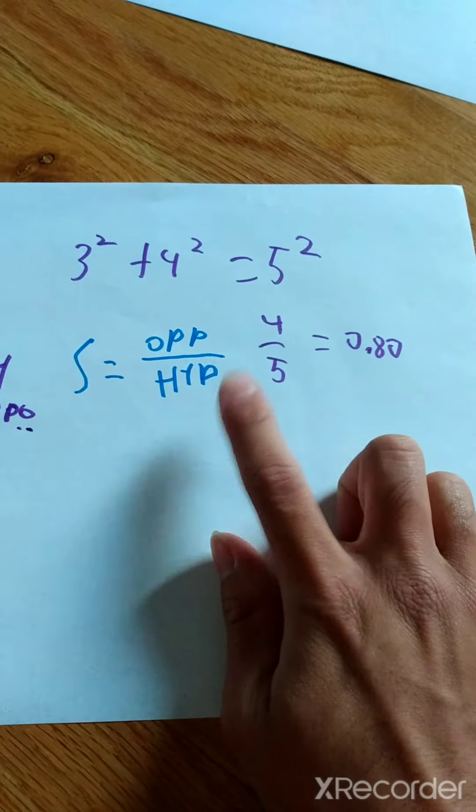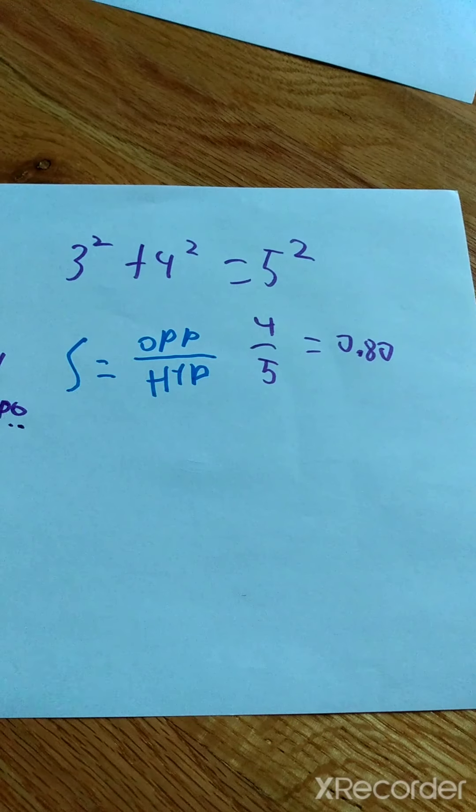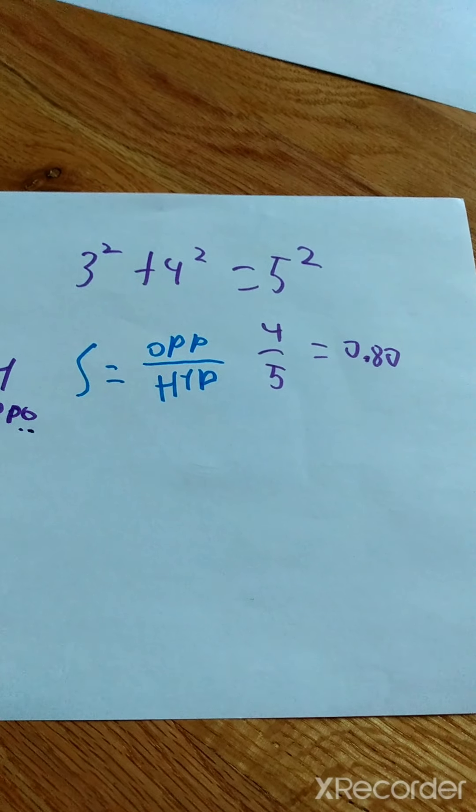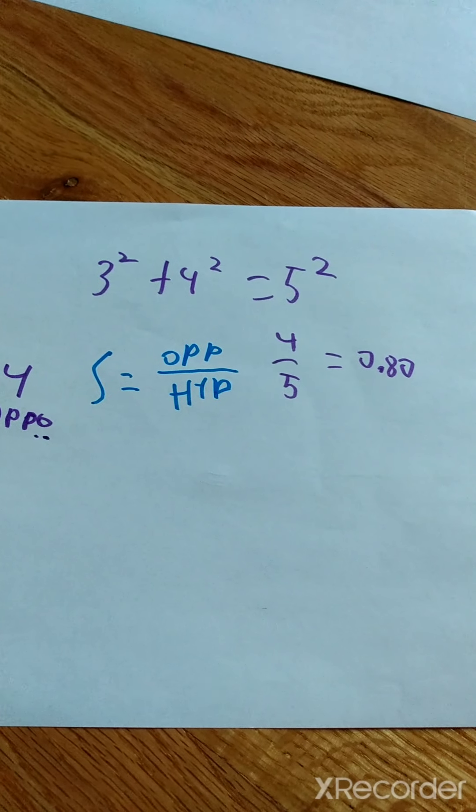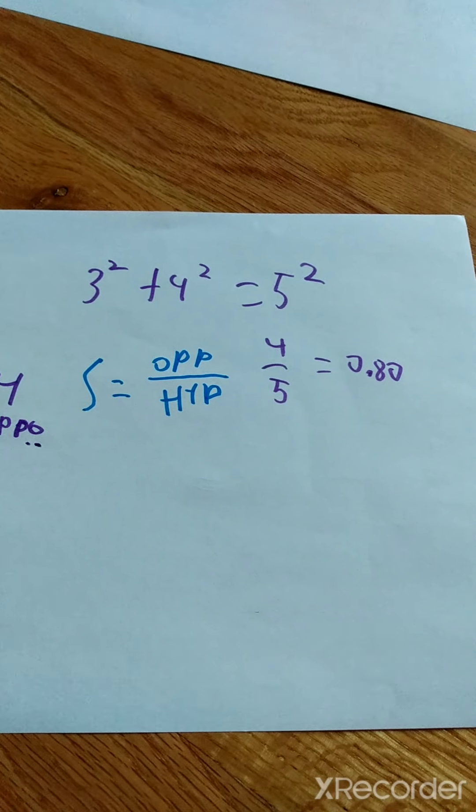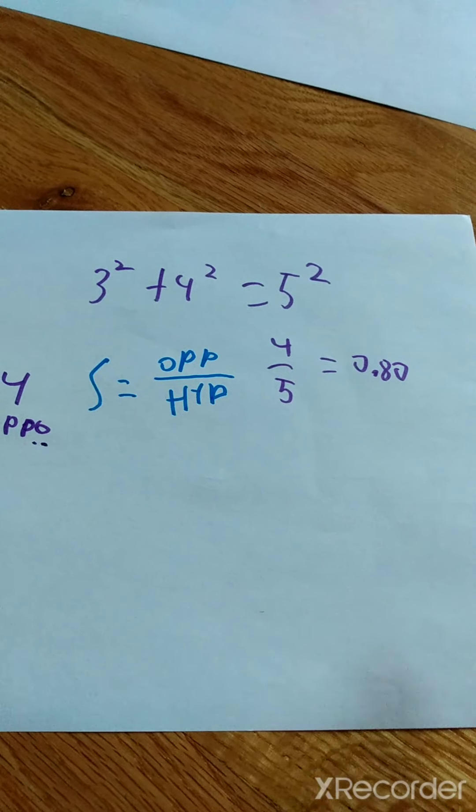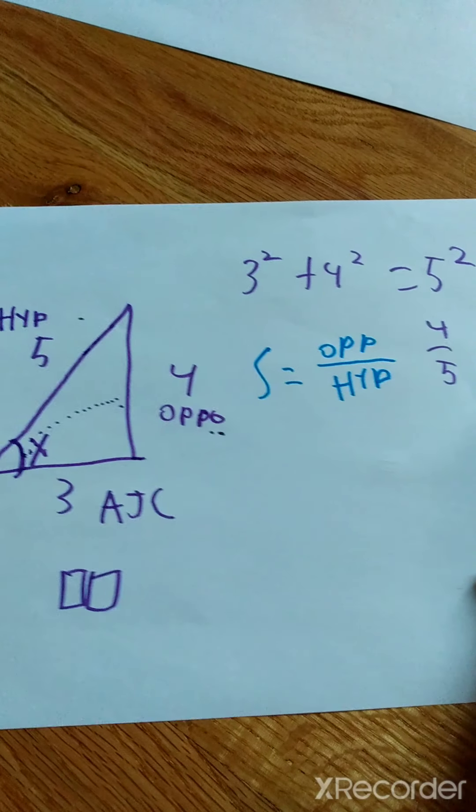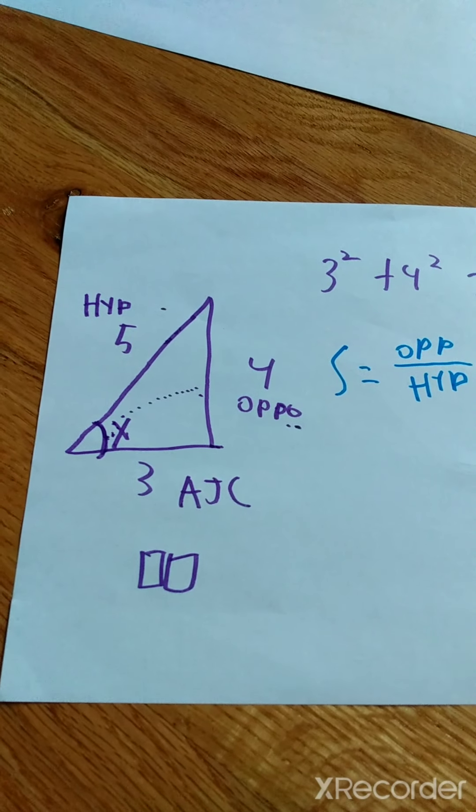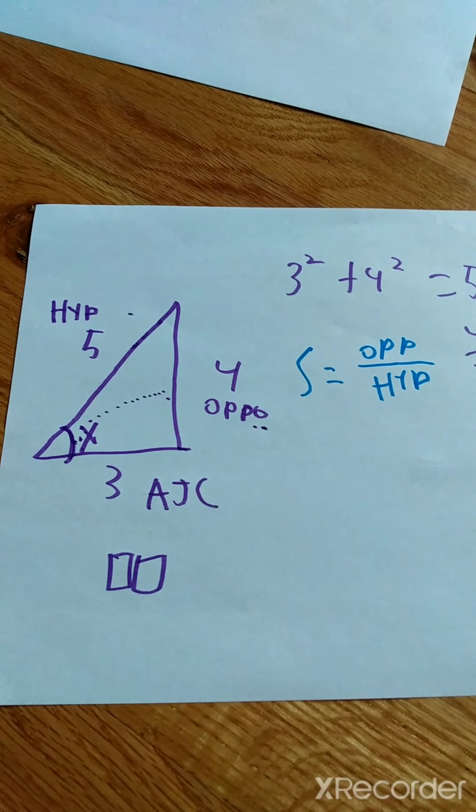Sine is actually used in the real world when you're calculating the height or the distance of something. Sine can actually be used in a GPS, so you can get to your destination fast and safely. That's why we use sine in real life.